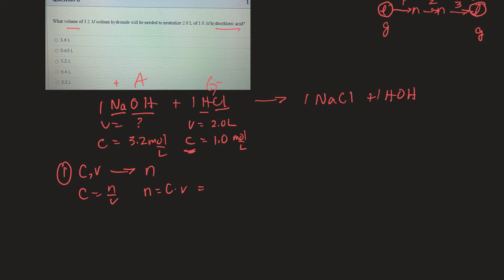So N is equal to the concentration, 1.0 moles per liter, multiplied by the number of liters, 2.0 liters. These cancel. So that will give me 2.0 moles. So I'm right there.